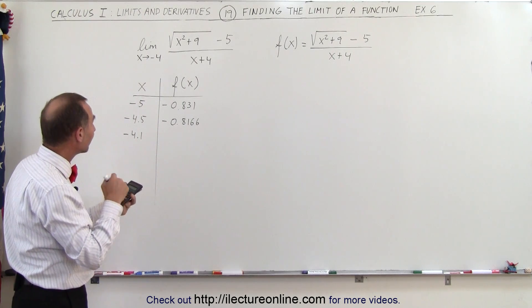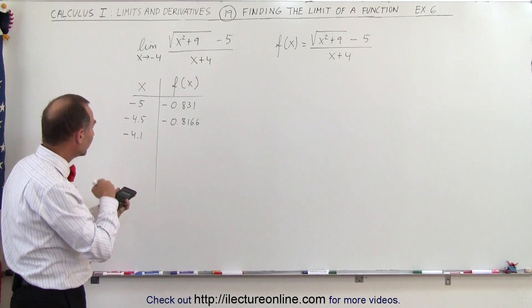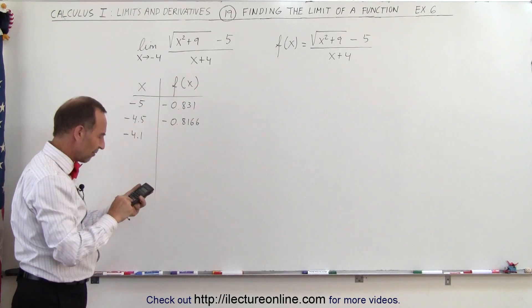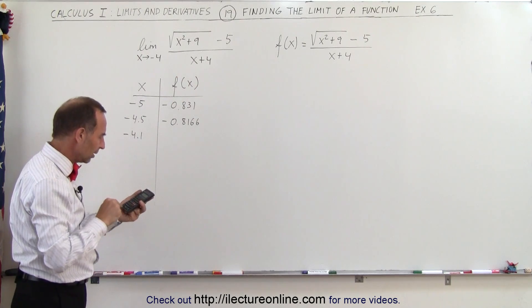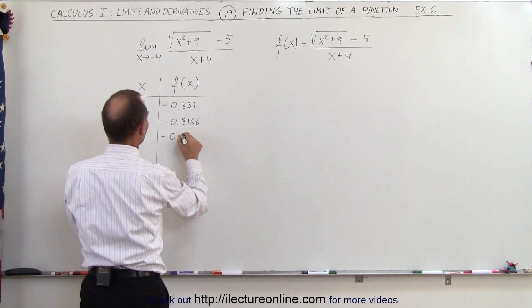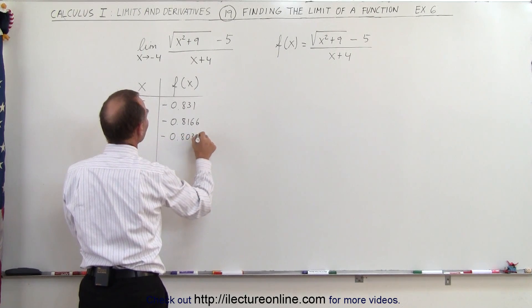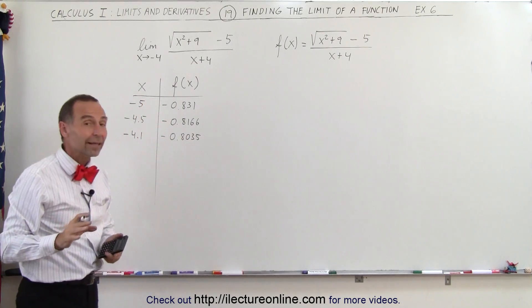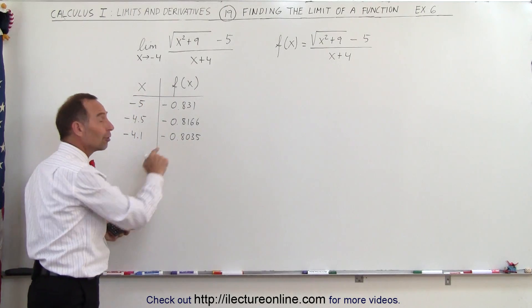subtract 5 from that, and then divide that by negative 4.1 plus 4, which is divide by negative 0.1, and we get negative 0.8035. I'm beginning to suspect that the limit may be negative 0.8.